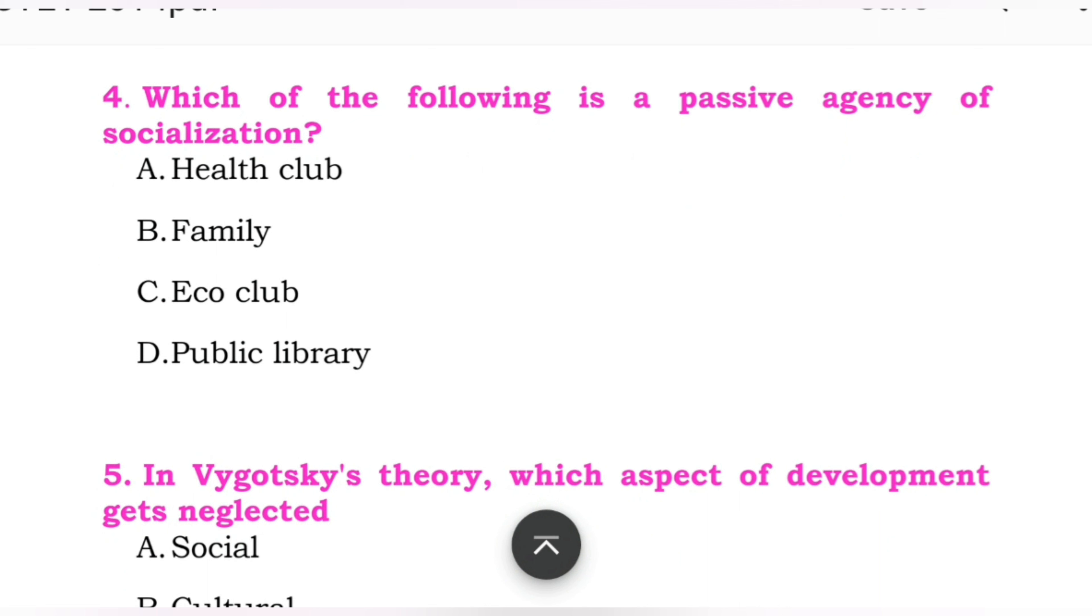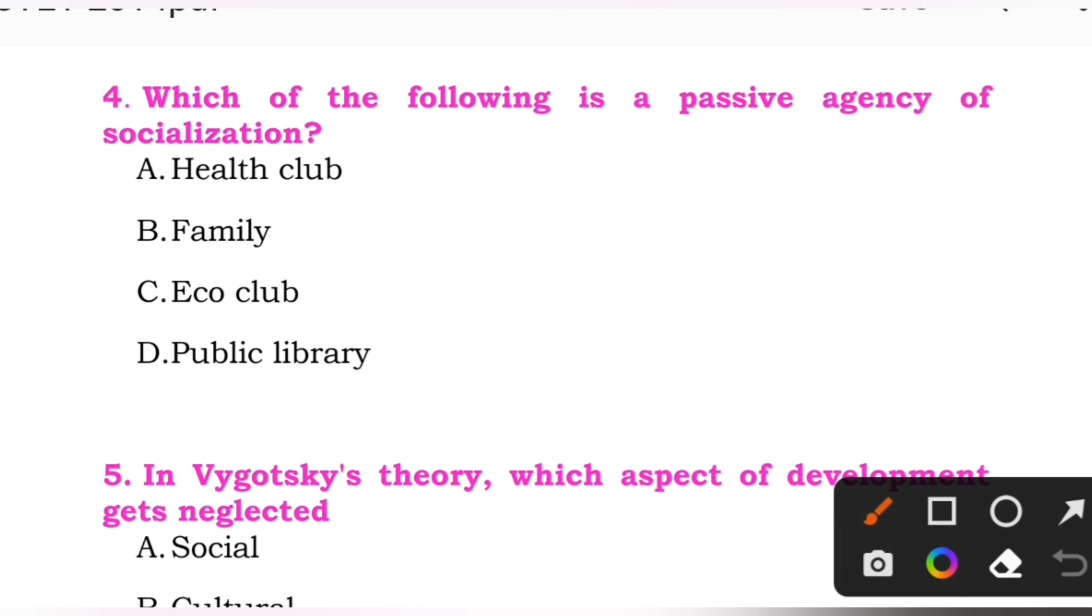Question number four: Which of the following is a passive agency of socialization? Options: A: health club. B: family. C: eco club. D: public library. Here, the right answer is D, public library.